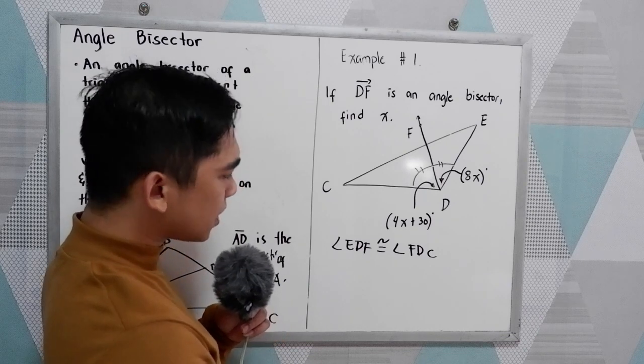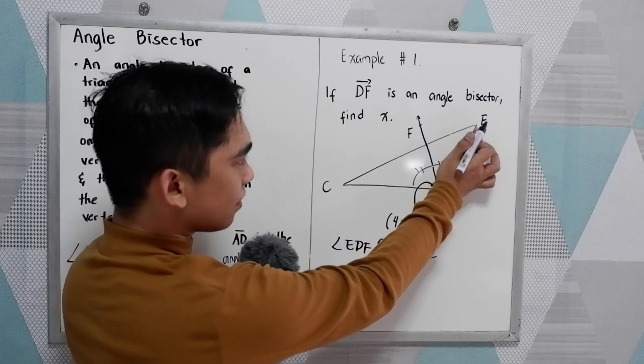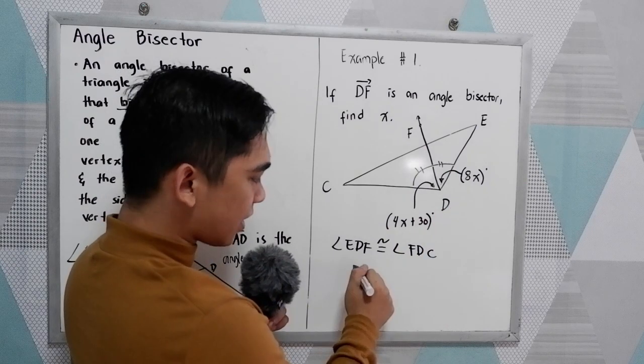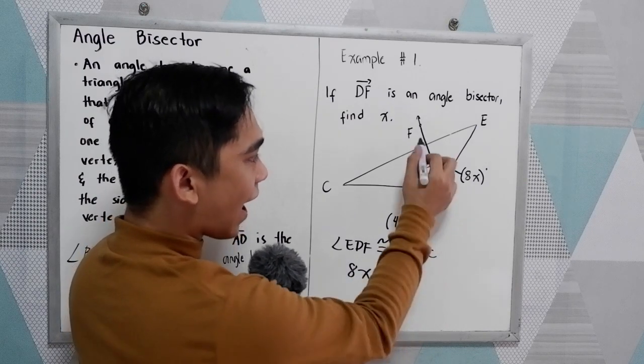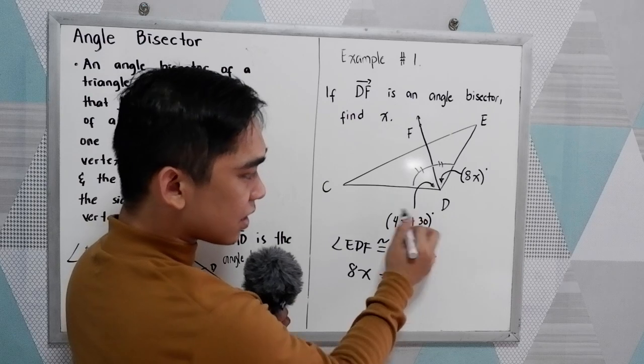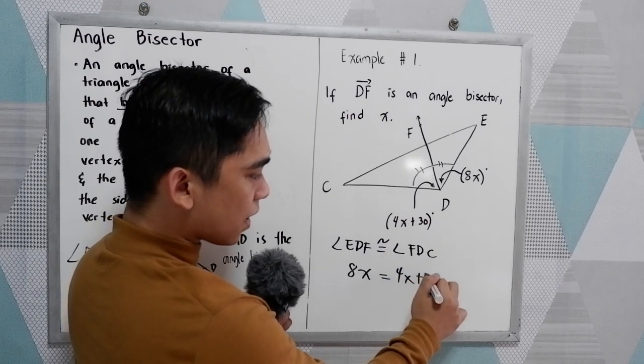Now substitute. We have the given EDF is 8X is equal to FDC. FDC is 4X plus 30.